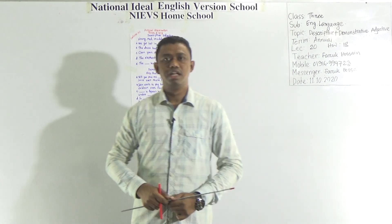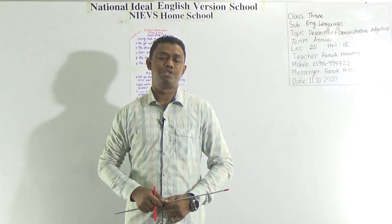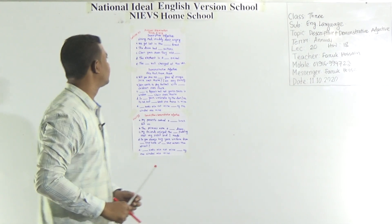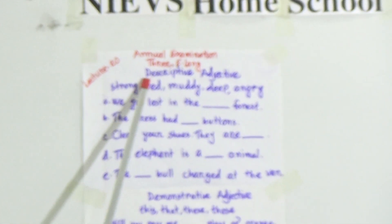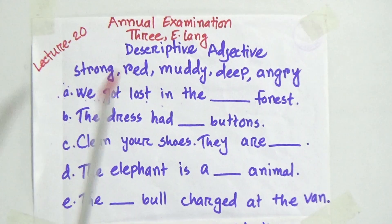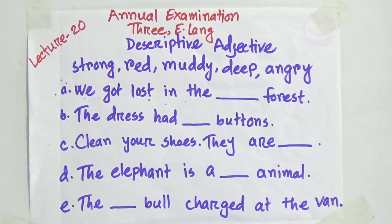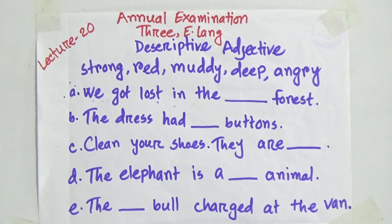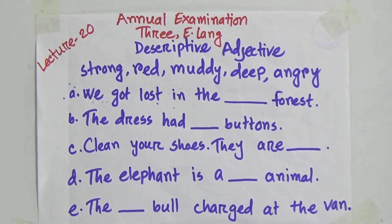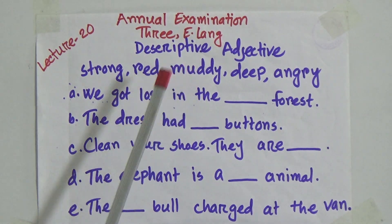So dear students, this is actually your revision class. Come to the board and practice. First of all, I have given 5 examples of descriptive adjectives. In your previous class, you already learnt about descriptive adjectives, its definition and all about it. Descriptive means describe something.